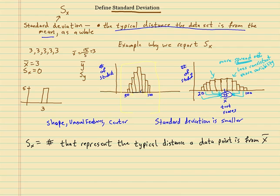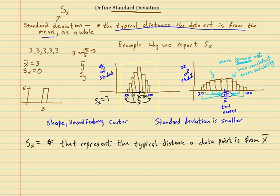For example, this distribution: X-bar is 75 and the max is 100. The typical distance here — I'd say the standard deviation was 7. So that means I could go up 7 to 82 and down 7 to 68. The typical distance would be kind of in that range. That means if something happens way outside of that, it's definitely not typical.